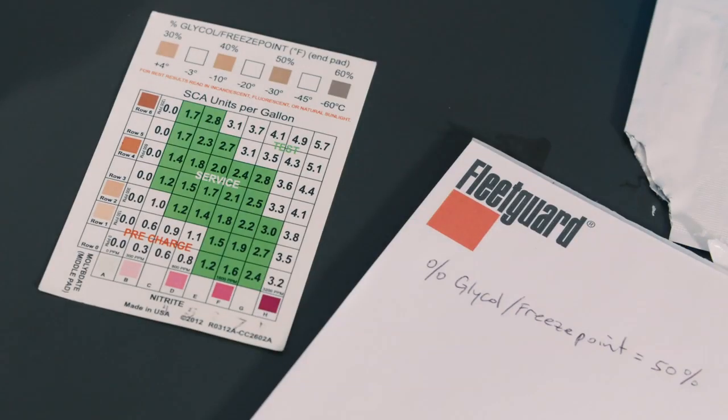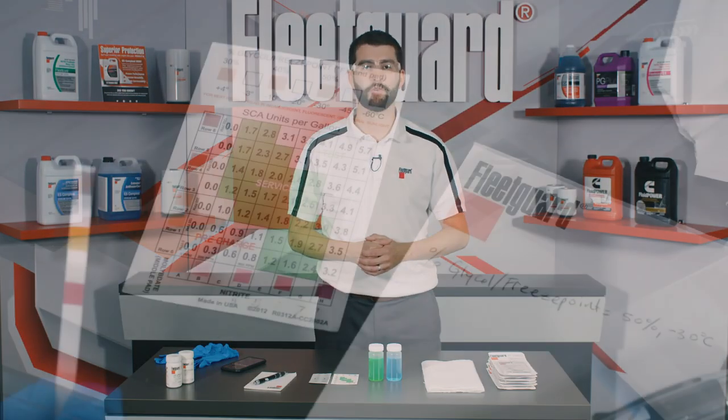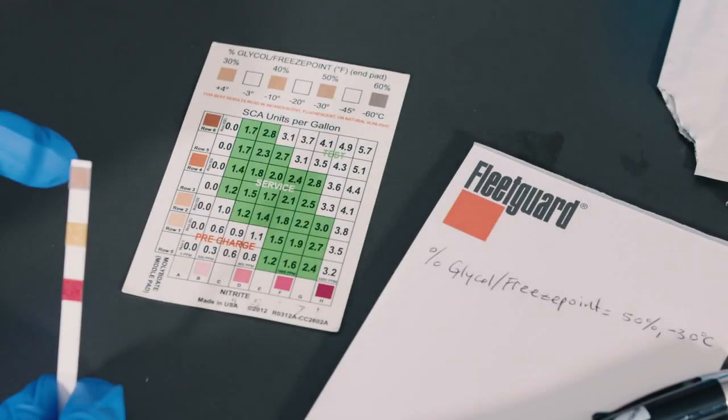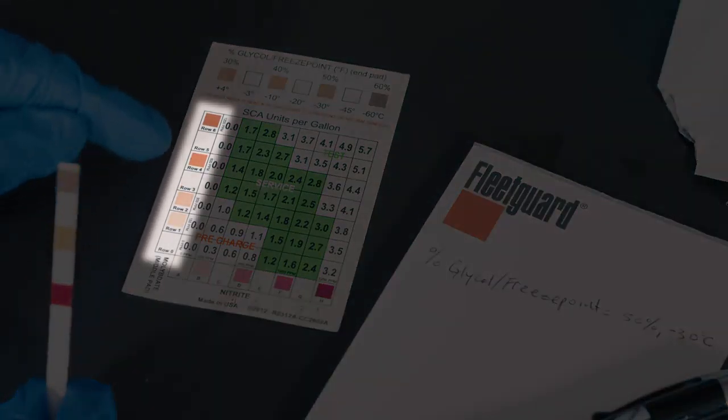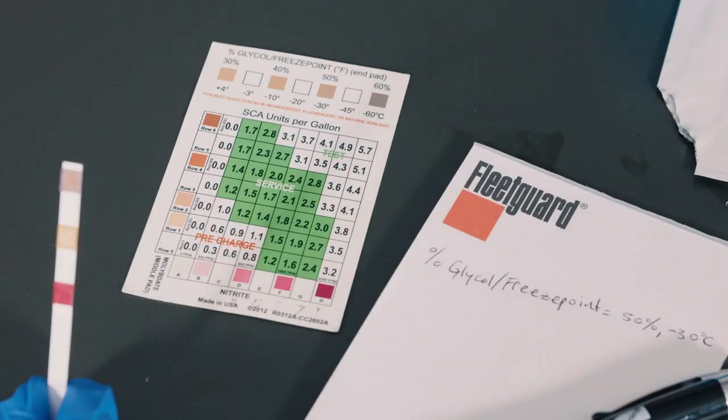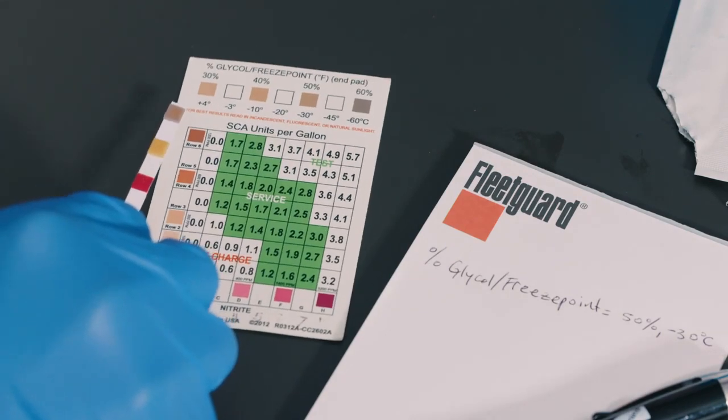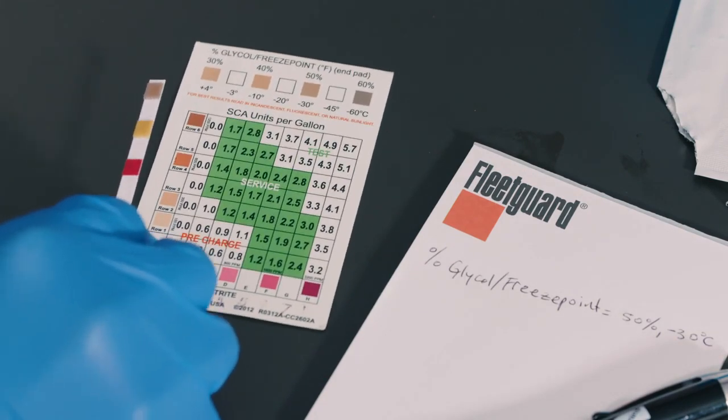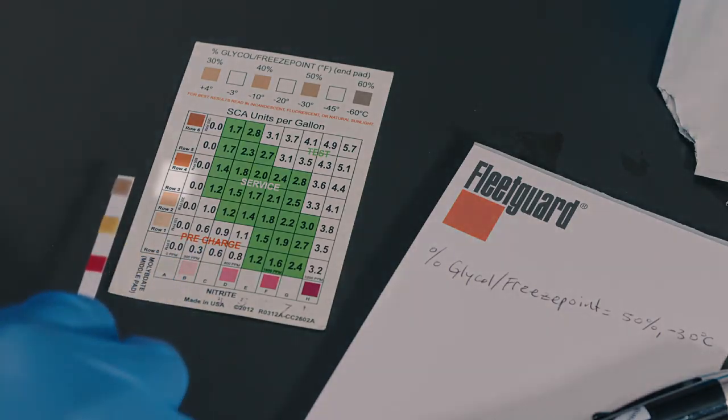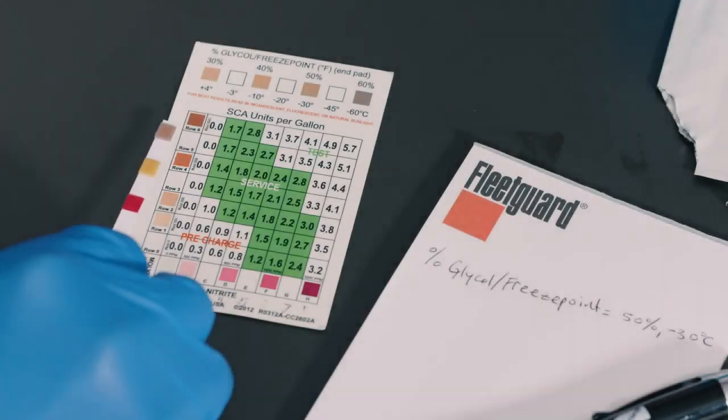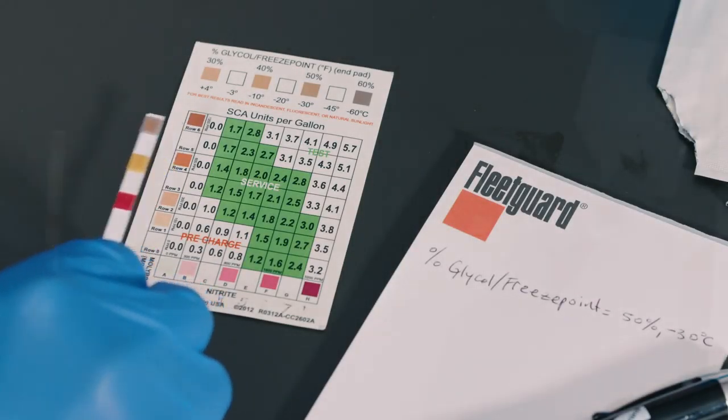Now let's compare the molybdate pad, which is the middle pad on the test strip, to the vertical axis on the chart that contains rows 0 through 6. Again, find the color on the chart that best matches the test pad and record that result. For this example, the best match is row 3. You may notice that row 3 is in between two of the color boxes, which is perfectly okay. Also, since not all coolants contain molybdate, it's possible to have a result of 0 for this test.